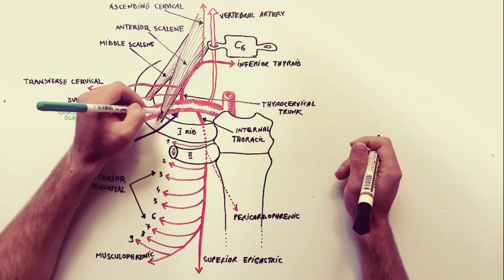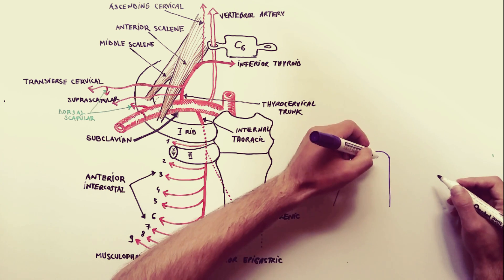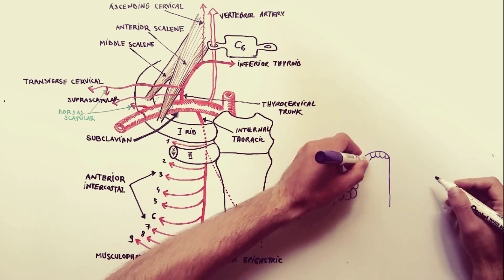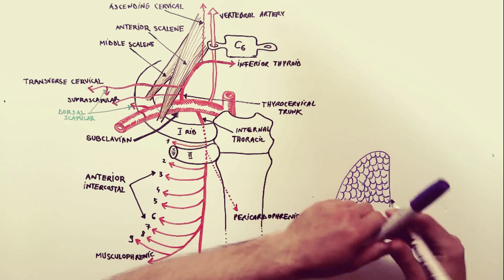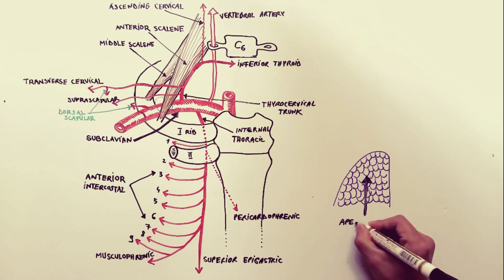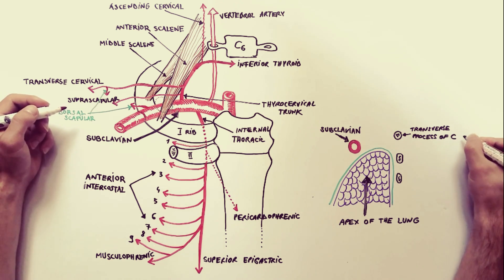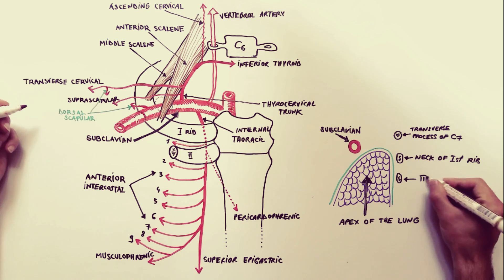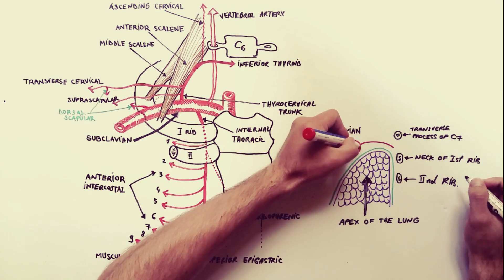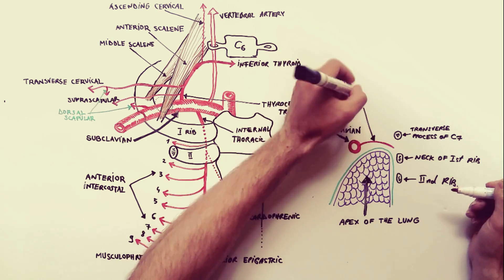One more branch to discuss is the costocervical trunk. The costocervical trunk arises from the prescalenic or interscalenic part of the subclavian artery. To show its details we will draw a new diagram. Using purple I have indicated the apex of the lung, along with a cross section through the subclavian artery in relation to the apex of the lung. Posteriorly we see the transverse process of C7, the neck of the first rib, and the cross section through the second rib. The costocervical trunk arises from the posterior aspect of the subclavian artery.